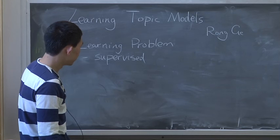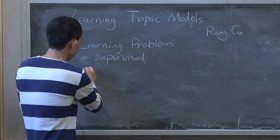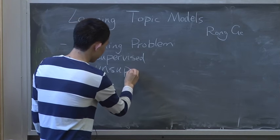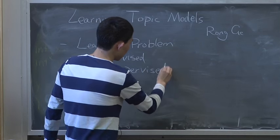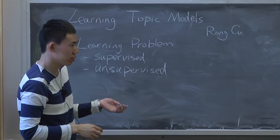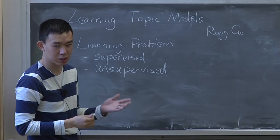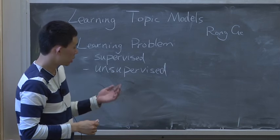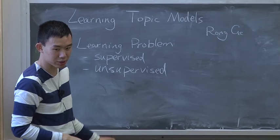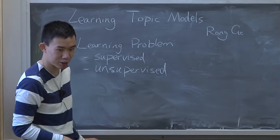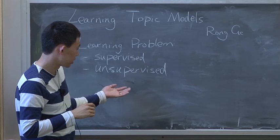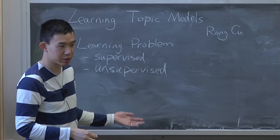The problem we are interested in is different — it's called the unsupervised learning problem. In unsupervised learning, the idea is that sometimes it's very hard or costly to get labels. Usually to get labels we need a human to label all the documents or emails or whatever you want to classify. So the idea of unsupervised learning is: what can we do without labels?